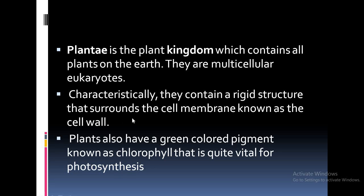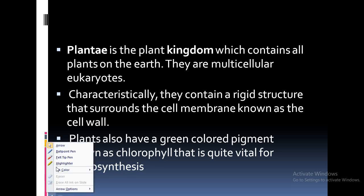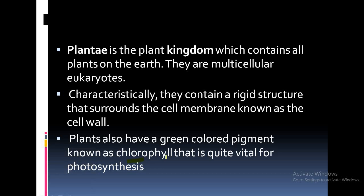Plants contain a rigid structure around the cell membrane known as the cell wall. We have already seen the difference between plant and animal cells in the first chapter. Plants also have a green-colored pigment known as chlorophyll.